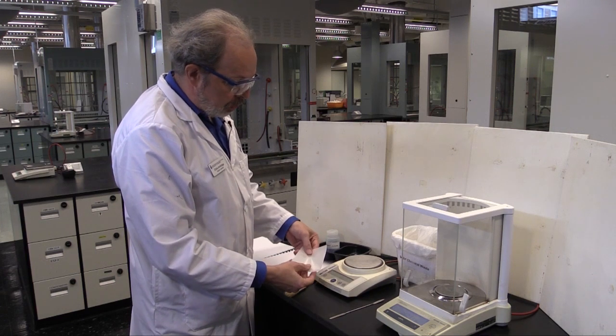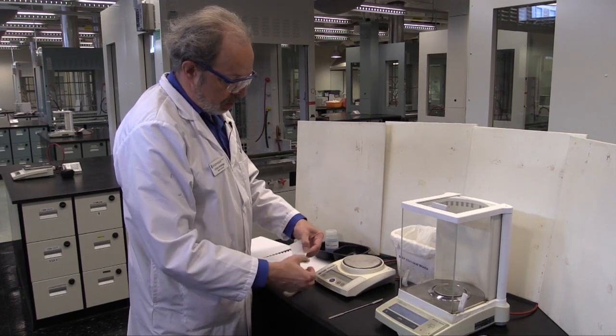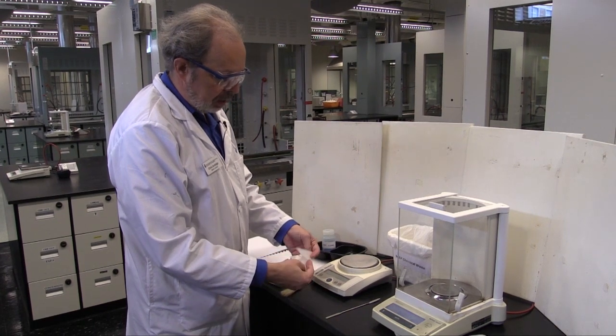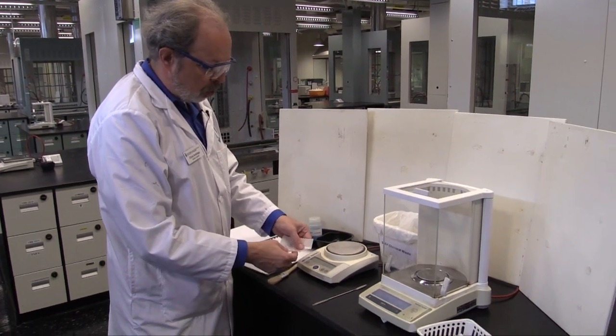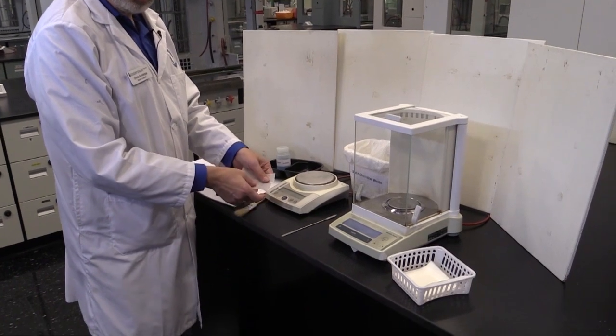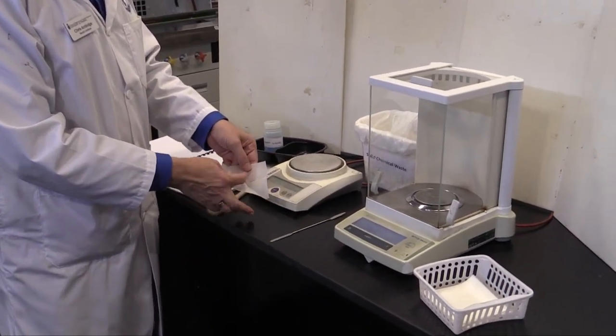These are actually disposable. When you've got one, crease it a couple of times diagonally across and that will cause a well where the chemical that you're weighing out will actually gather.